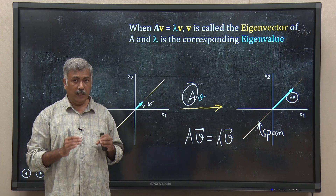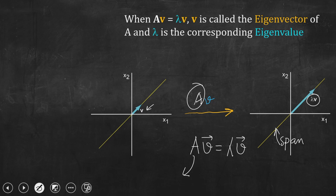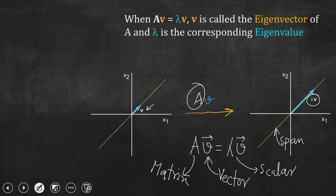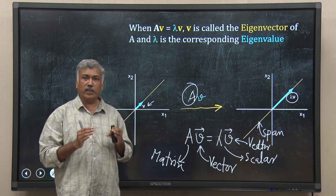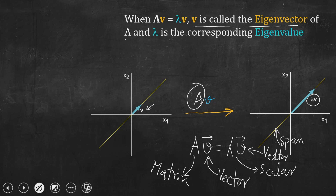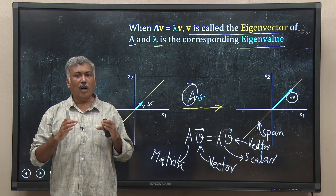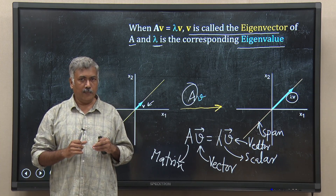So, if I have this situation where A times v — A is a matrix and v is a vector — and if I multiply them I get a scalar times the original vector, then we say: v is the eigenvector of A, and lambda, the scalar, is the corresponding eigenvalue. This is how we define an eigenvalue or an eigenvector of a particular matrix A.